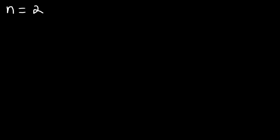In this video, we're going to talk about how to write polynomial functions given the zeros. So let's say if we have a polynomial function with a degree of 2, with zeros of 1 and 2, and when x is 3, the function has a value of 6. Write a polynomial function with these characteristics.